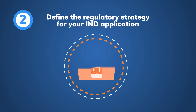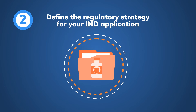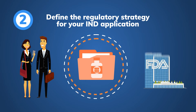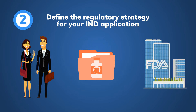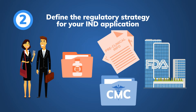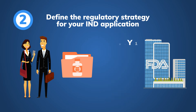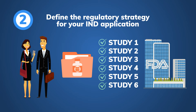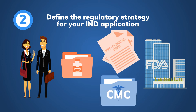Step 2: Define the regulatory strategy for your IND application. Based on the outcome of the gap analysis, the team will define the appropriate regulatory strategy for your IND submission to FDA. If the outcome of the gap analysis shows that the available preclinical and CMC data is not enough to support IND application, the GRP team will recommend the list of additional preclinical studies and/or CMC data to collect before IND submission. If the outcome shows that you have enough data, the GRP team will start the activities in Step 3.